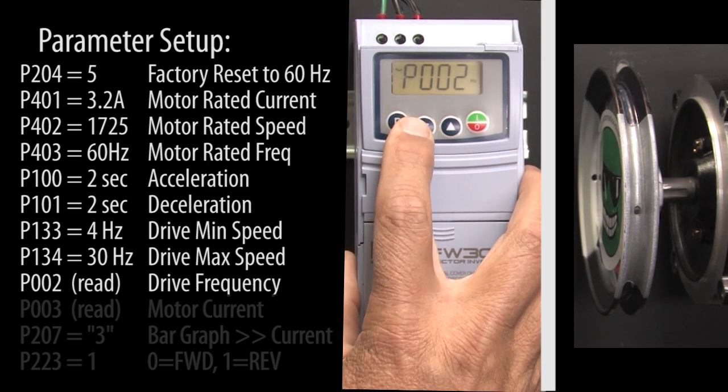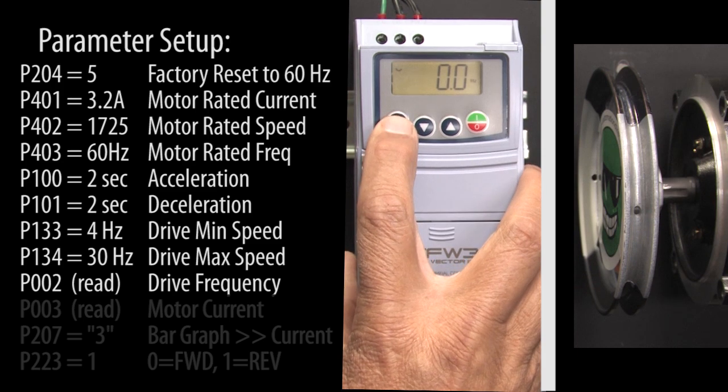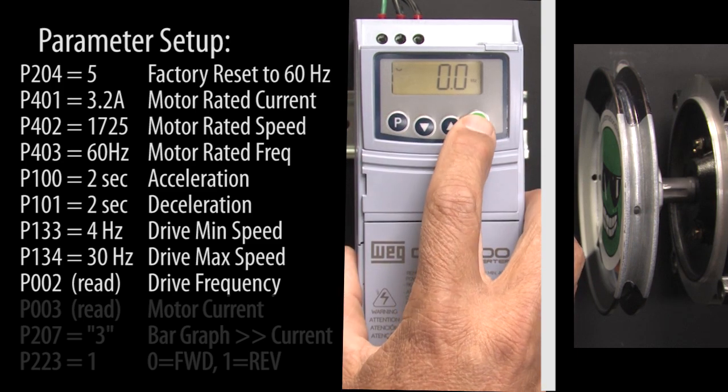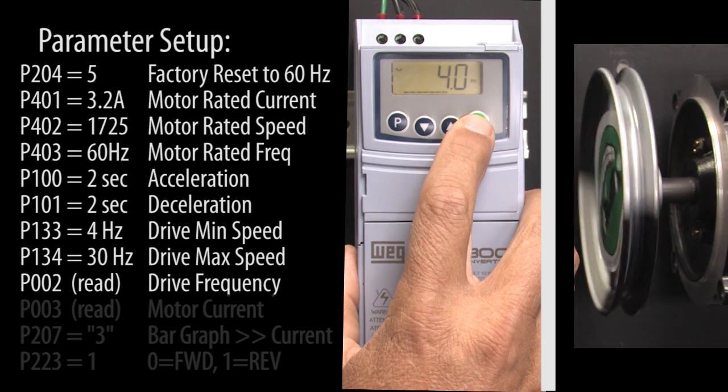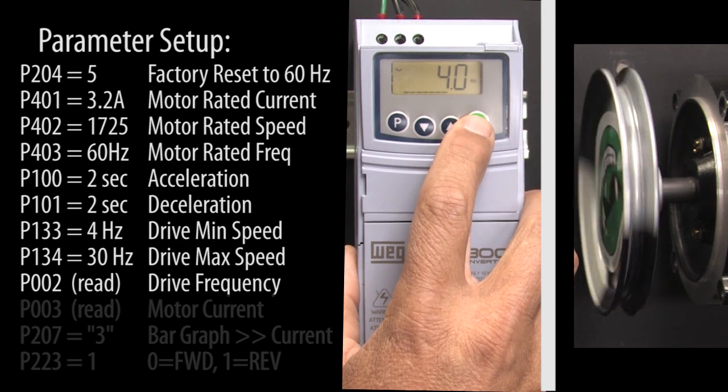Scroll to parameter 2 which shows us the drive's output frequency and press the run stop key to start the motor. And sure enough, the drive ramps the motor to the 4 Hz minimum output frequency we just entered. Perfect.